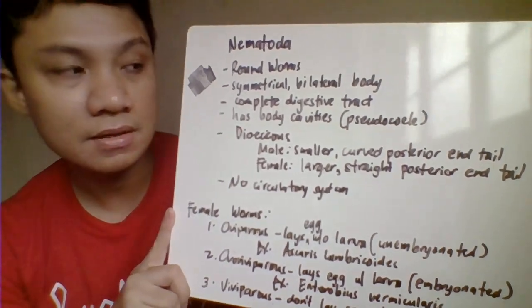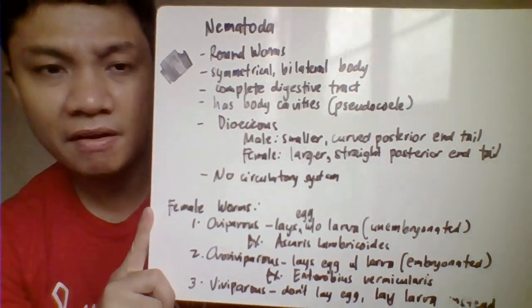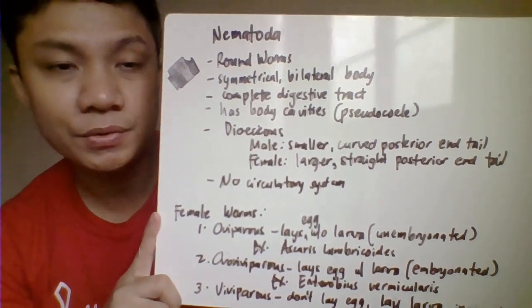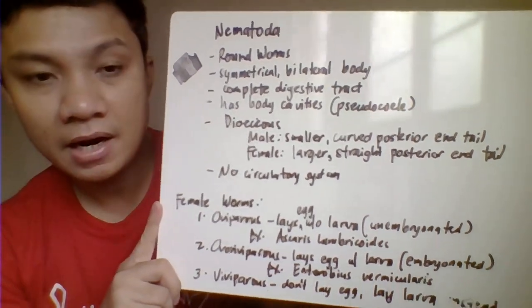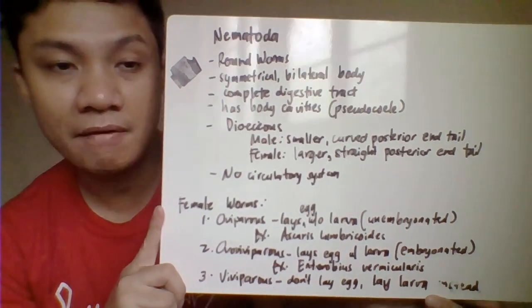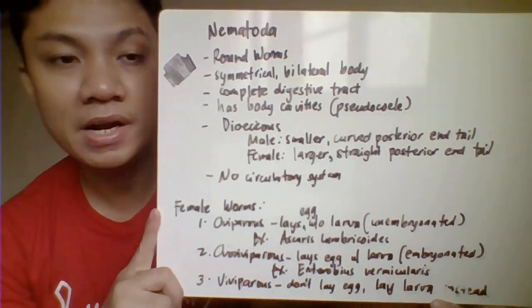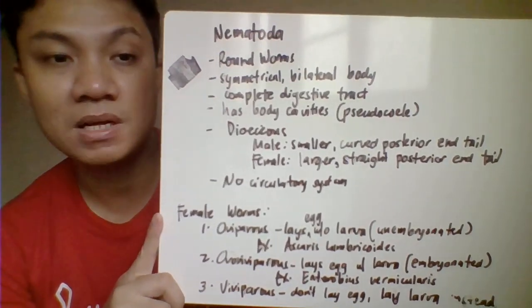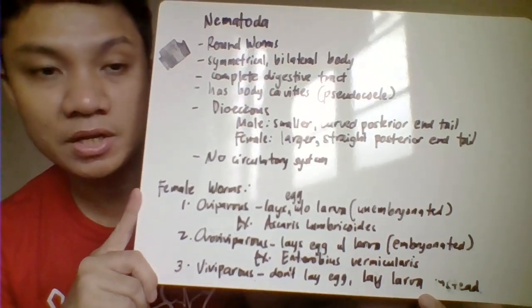They also have a complete digestive tract. They have a body cavity called a pseudocoele. For their sex, adult worms have separate body plans for male and female. That's why they are called dioecious.